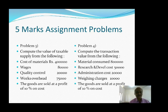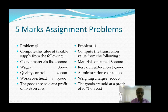You can practice: compute the value of taxable supply from the following cost details — cost of material rupees 4 lakh, wages rupees 80,000, quality control rupees 20,000, overhead rupees 75,000. The goods are sold at a profit of 10% on cost.